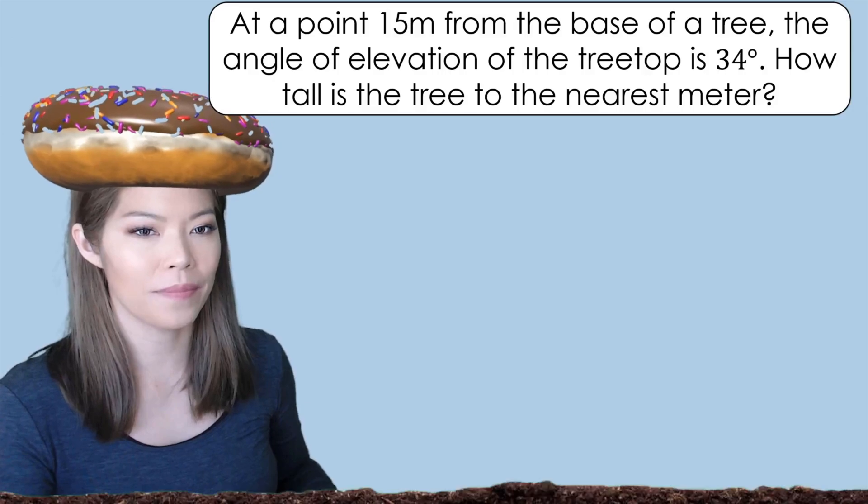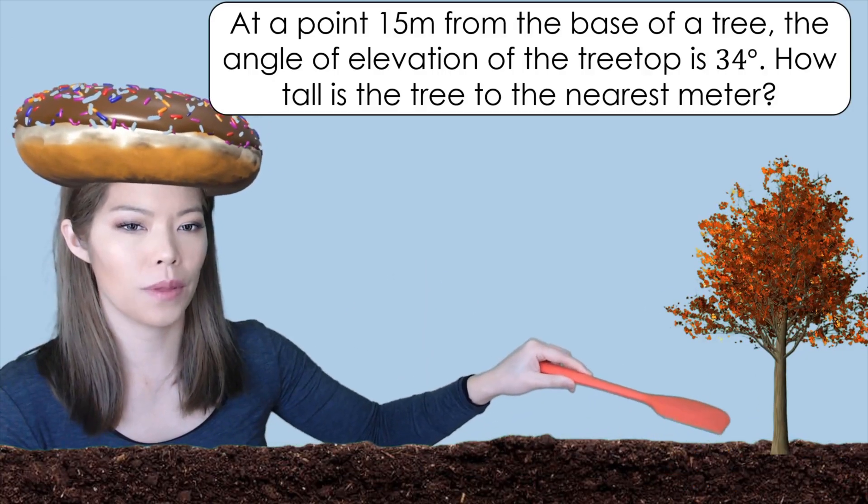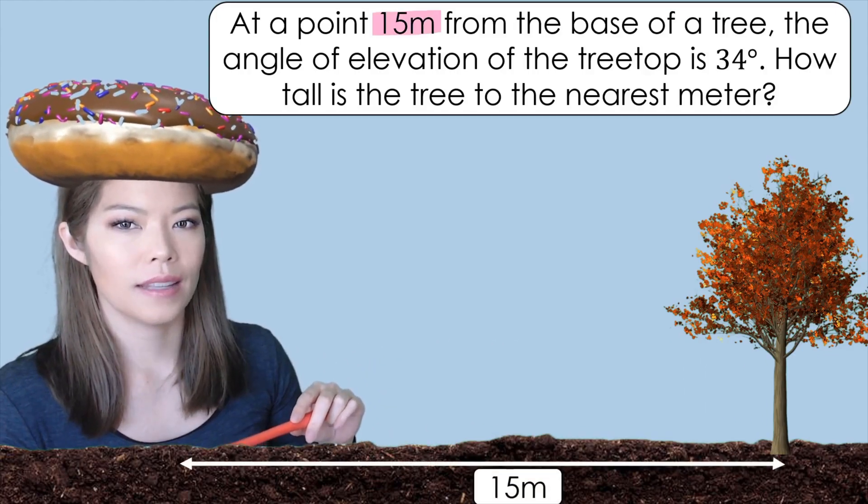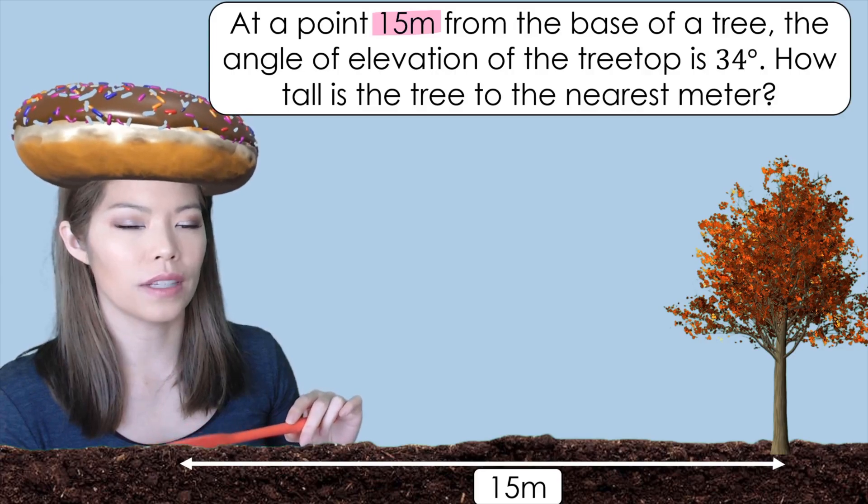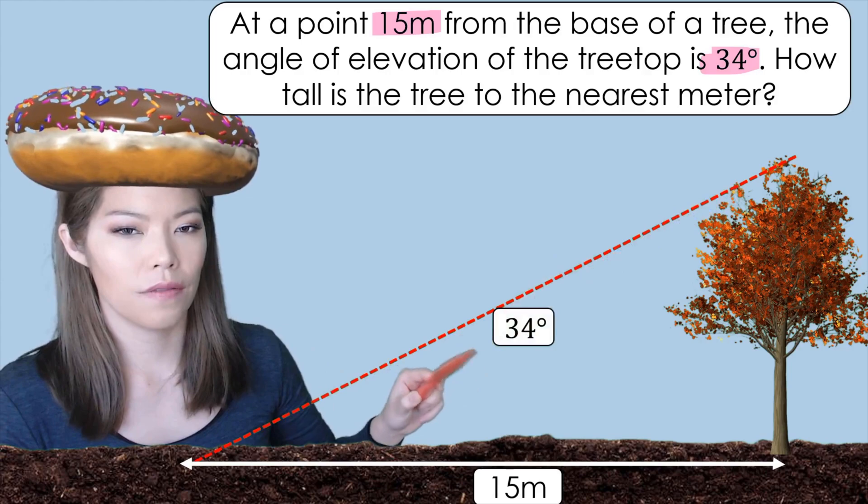Let's draw a diagram. So we have a tree and it says at a point 15 meters from the base. So the base is here, 15 meters would take us all the way there. The angle of elevation of the treetop. So the treetop is up here, 34 degrees.